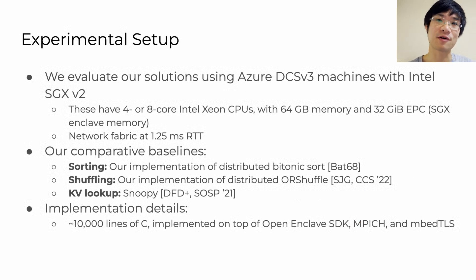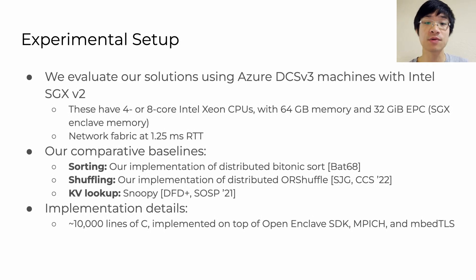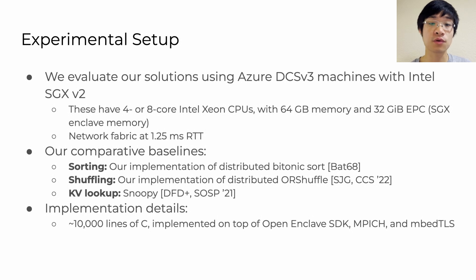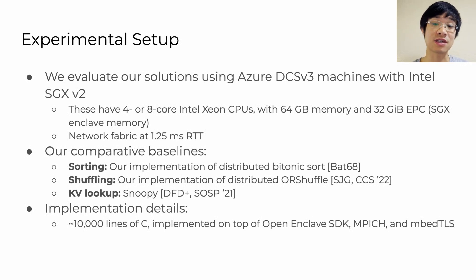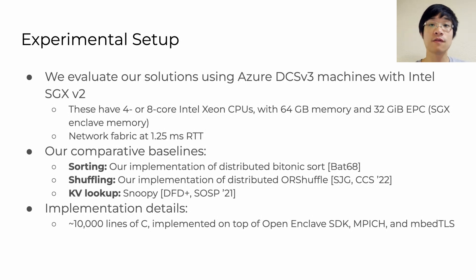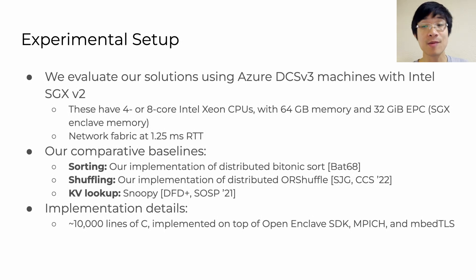Putting all of this together, let's talk about performance and evaluation. To compare our solution against prior works, we use Azure Confidential Computing machines, which provide Intel SGX P2 as the hardware enclave technology. These run either 4- or 8-core Intel Xeon CPUs, each with up to 64GB of memory including 32GB of protected enclave memory. We compare against our own optimized BitonicSort implementation, the OR shuffle algorithm introduced in CCS '22, and Snoopy as our baseline for oblivious distributed key-value lookup. All of this is implemented in about 10,000 lines of C, on top of OpenEnclave as the hardware enclave SDK, MPitch as the MPI layer, and MbedTLS for cryptographic operations.